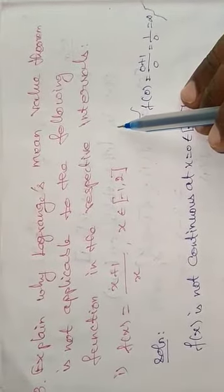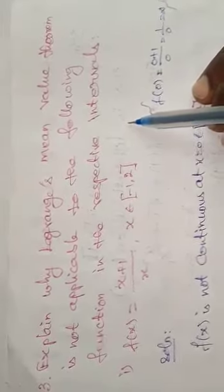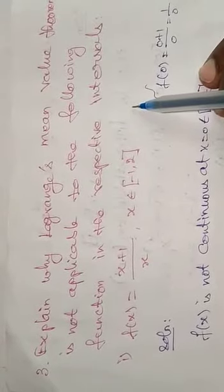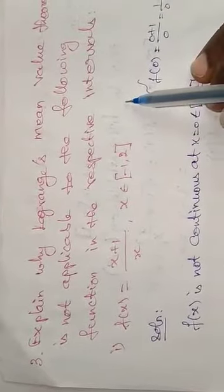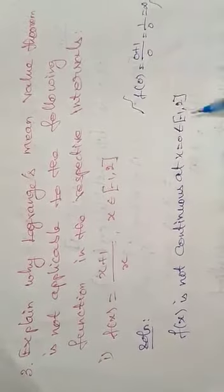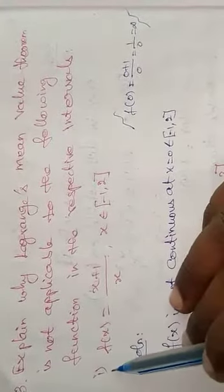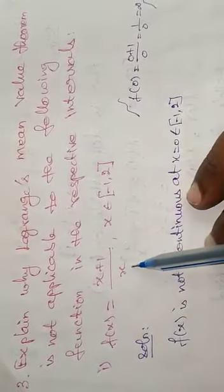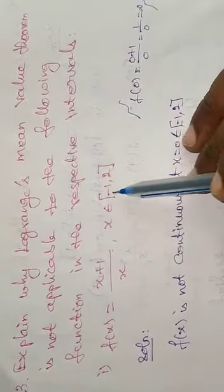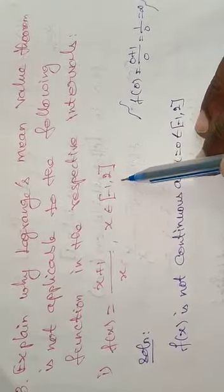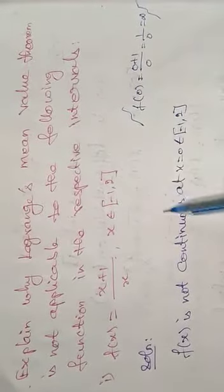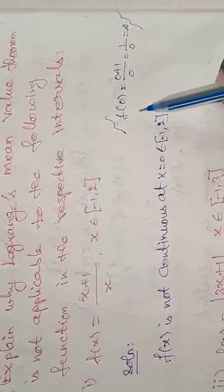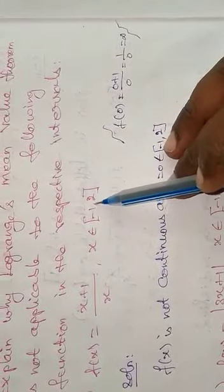First, continuous and differentiable, and next, f(a) equal to f(b) is not necessary for the Lagrangian Mean Value Theorem. First question: f(x) equals x plus 1 divided by x, where x belongs to closed interval minus 1 comma 2. For example, we are going to see in between minus 1 to 2.